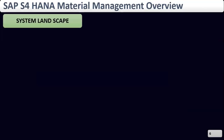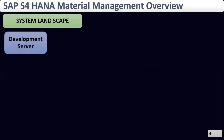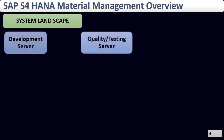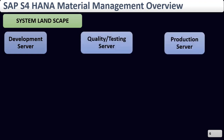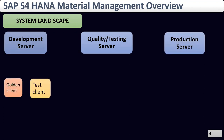Now we are going to discuss the landscape of SAP. The first landscape is the development server, then the quality system server, and the production server. In the development system there is a golden client and a testing client. In the golden client we configure the business requirements, and in the testing client we do testing before going live with the golden client.